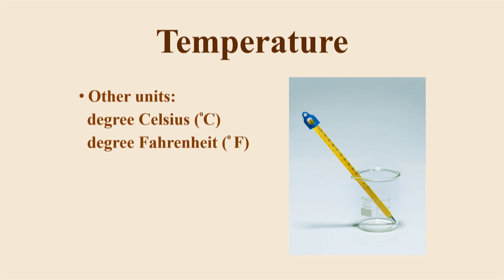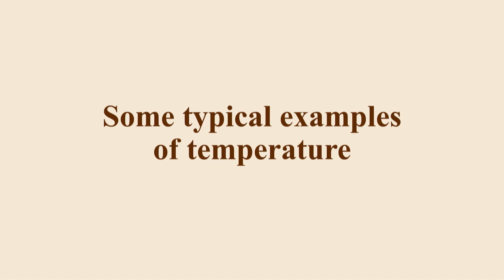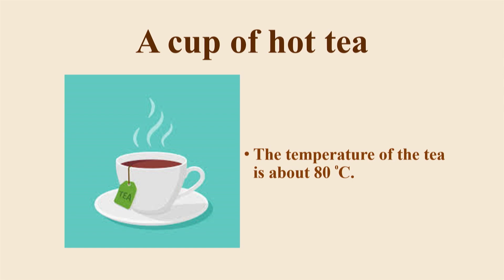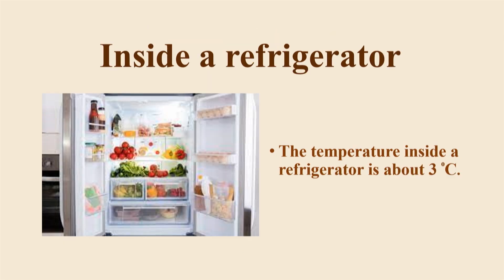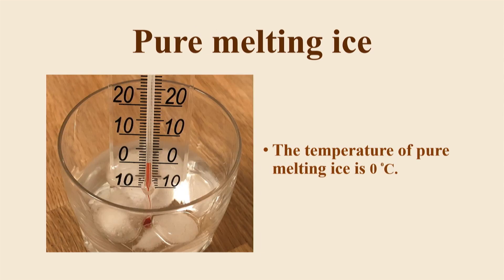Temperature is measured using a thermometer. Let us have a look at some typical values of temperature. The temperature of a healthy human being is about 37 degrees Celsius. The temperature of a cup of hot tea is about 80 degrees Celsius. The temperature inside a refrigerator is about 3 degrees Celsius. Pure water boils at 100 degrees Celsius, whereas pure ice melts at 0 degrees Celsius.